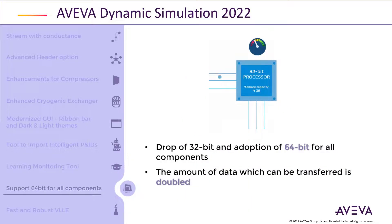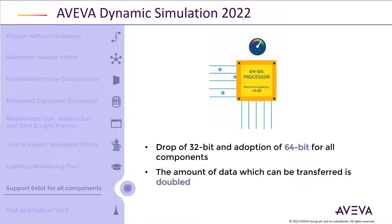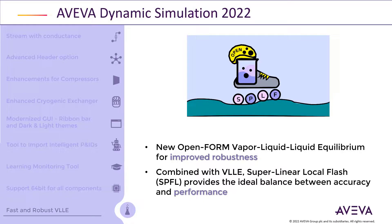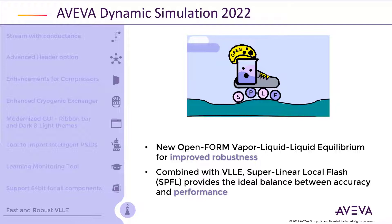We are dropping support for 32-bit and adopting 64-bit for all components of the product. The result is that we double the amount of data which can be transferred, as we can now access and use more than 8 GB of memory, while 32-bit allows only 4 GB. We now have a more robust algorithm for vapor-liquid-liquid equilibrium based on open form. We are also improving the performance of vapor-liquid-liquid equilibrium calculations by using the new super-linear local flash option.